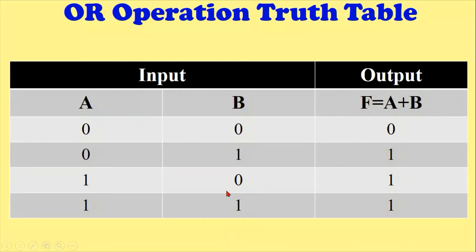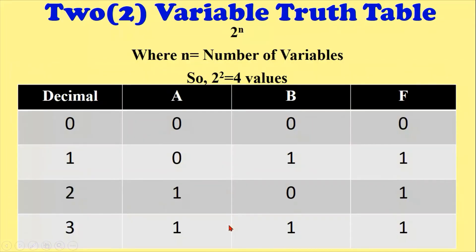Now, how could you develop the truth table for different numbers of variables? There is a formula: two to the power of small n, where small n equals the number of variables. For example, if you have two variables, then two to the power two means four values. So you will have four different combinations of two variables in binary numbers.